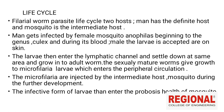The larvae settle down in the same area and grow into adult worms. The sexually mature worms give rise to microfilaria larvae which enter the peripheral circulation. The microfilaria is then ingested by the intermediate host mosquito during a blood meal, for further development.